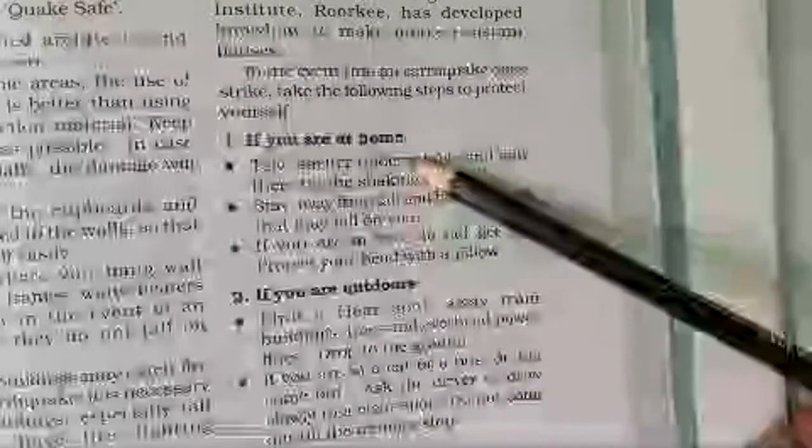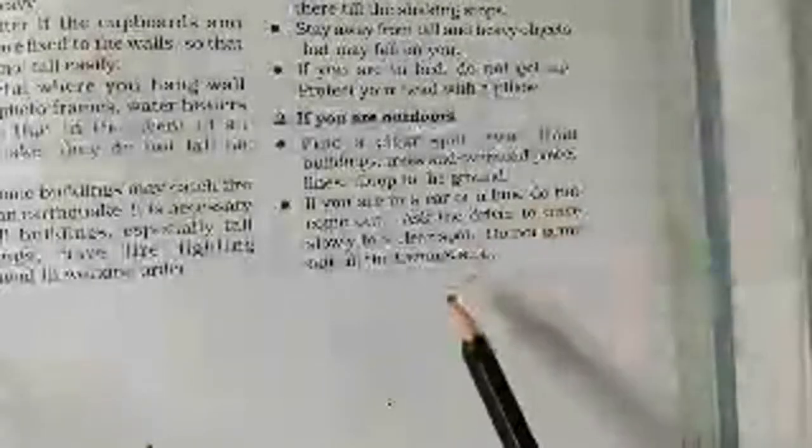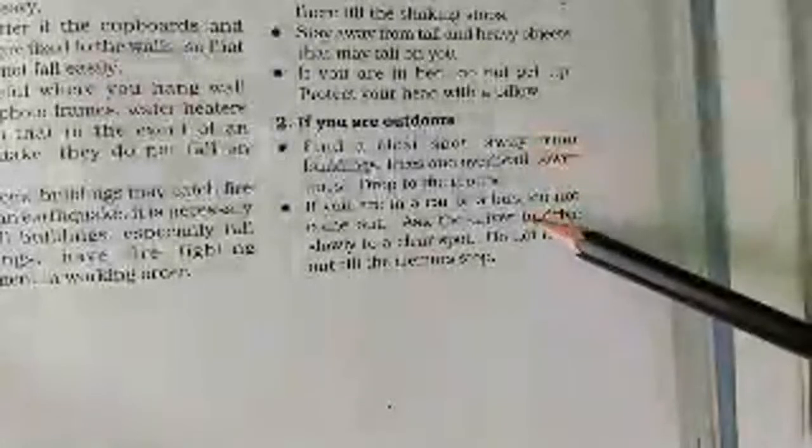When you are at home during an earthquake, take shelter under a table or bed so falling objects don't hit your head. Stay away from tall heavy objects. If you are in a bed, protect your head. If you are outside, find a clear open space and sit down, because in a heavy earthquake you can fall down. If you are in a car, do not come out as the car body may protect you.